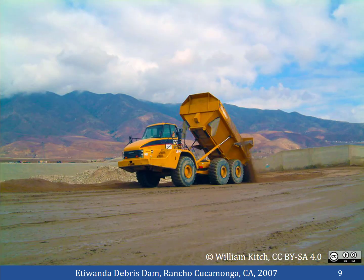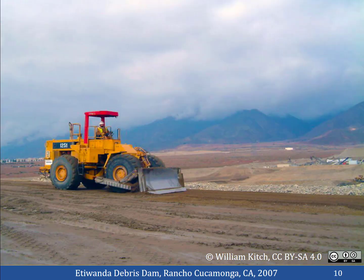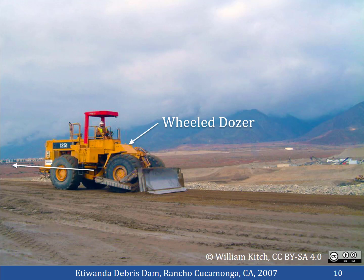Here you see the dump truck from the previous photo dumping the fill material at its intended location. You'll note that at this point the fill isn't placed very smoothly. Before the fill can be compacted, it must be smoothed out to a uniform thickness. Here you see a dozer smoothing out the soil dumped by the dump truck. The dozer is actually moving from right to left, dragging the soil on the backside of its blade. The dozer leaves behind a relatively smooth layer of soil called a lift, which raises the surface of the fill.